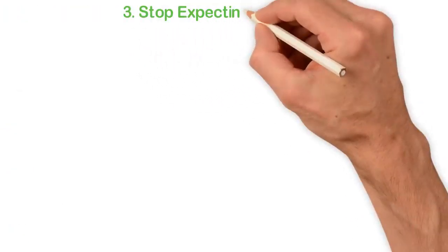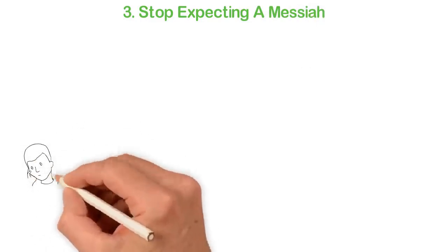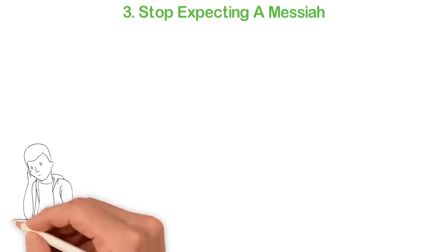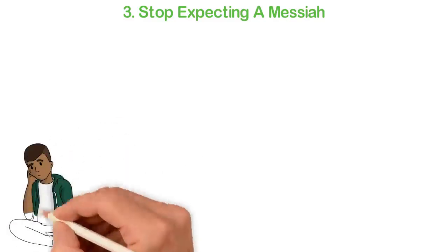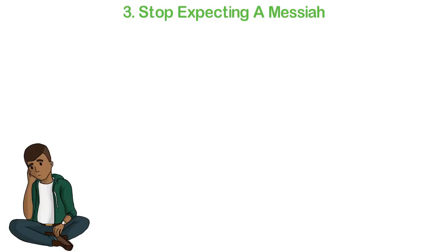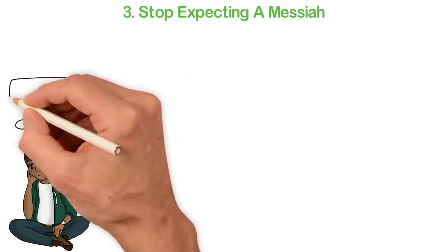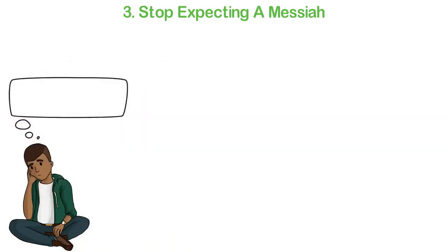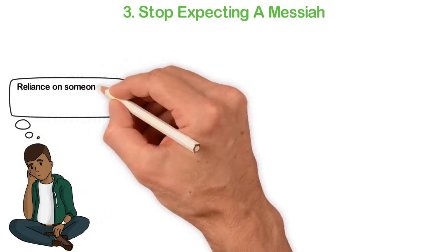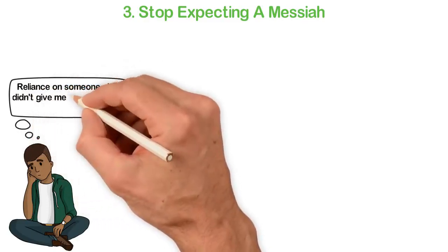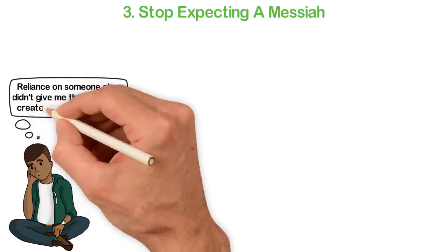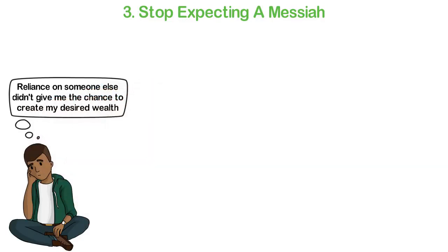Third, stop expecting a Messiah. We were all trained to expect a Messiah. Someone to give us a job, someone to fix our roads, economy and life, someone to take care of us when we are old and other things. Well, if you really want to be a successful entrepreneur, you'll have to stop expecting someone else to fix your life. You don't only have to be independent. You have to become a Messiah.